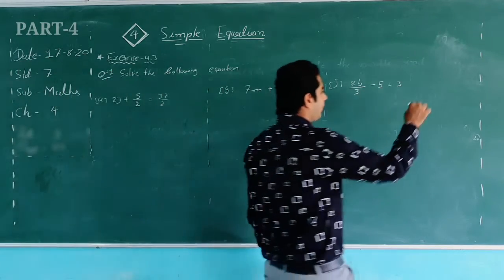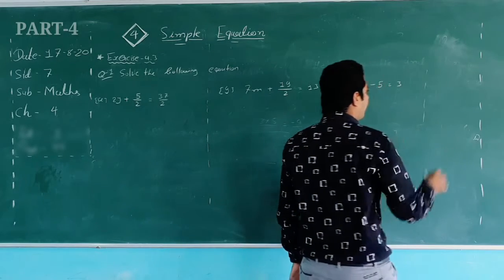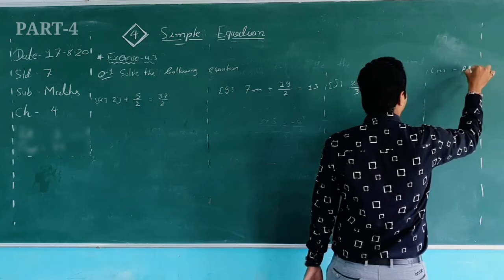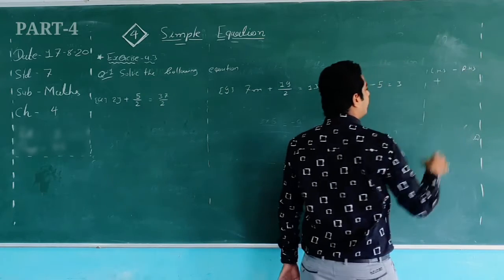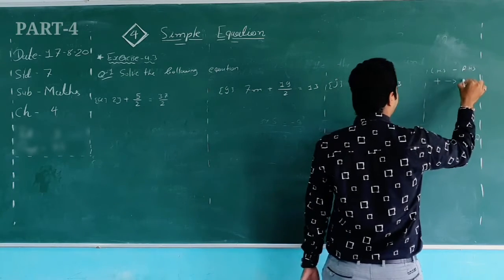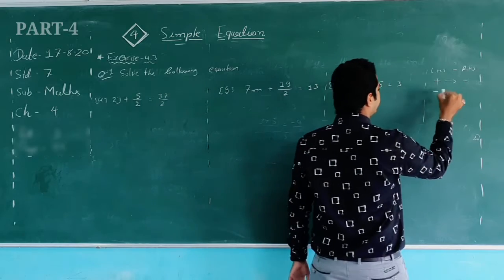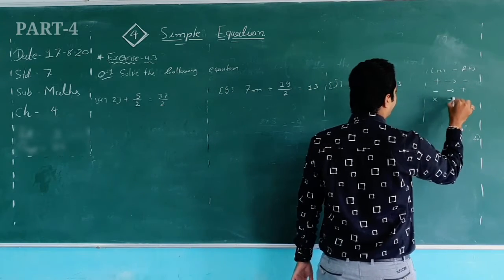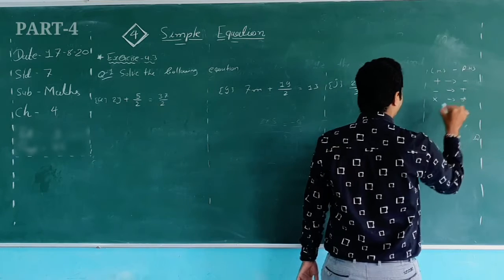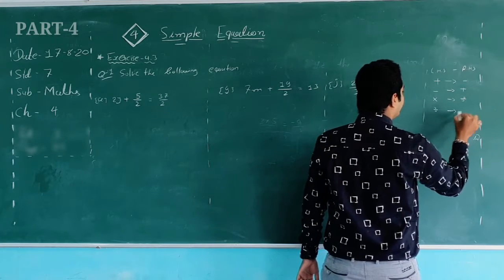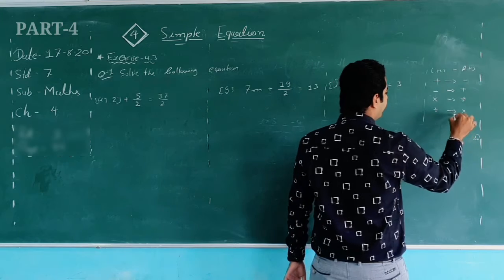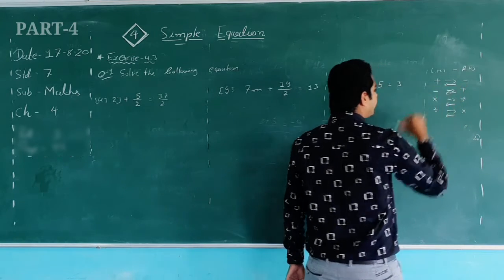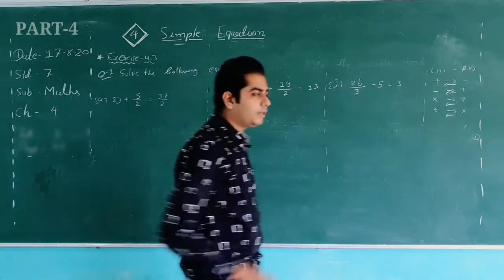For both the transposing method and the separation method, the rules are: if there is addition on the left-hand side and you move it to the right-hand side, it becomes subtraction; if there is subtraction it becomes addition; if there is multiplication it becomes division; and if there is division it becomes multiplication. The same rules apply moving from right to left as well.